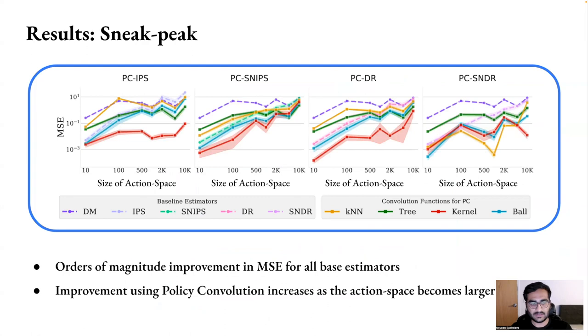Quickly looking at our results, we see that we get orders of magnitude improvement in MSE for different kinds of base estimators. And we see that the improvement using policy convolution increases as the size of the action space increases. That's it. And for more details, I would recommend reading our paper. Thank you.